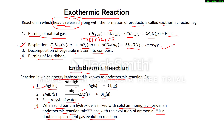This is a double displacement and gas evolution reaction. Write the balanced chemical equation yourself: barium hydroxide plus ammonium chloride. A double displacement reaction takes place — first barium chloride and ammonium hydroxide are formed, but ammonium hydroxide decomposes to give ammonia and water. So the products are barium chloride, ammonia, and water. This is an endothermic reaction.